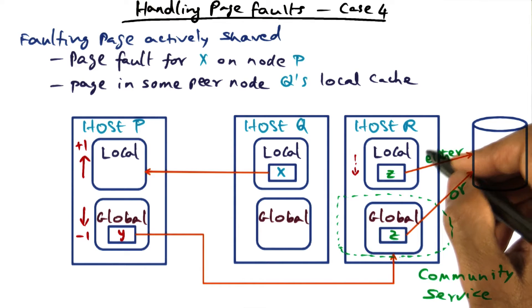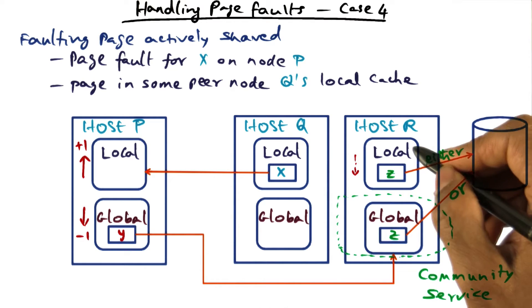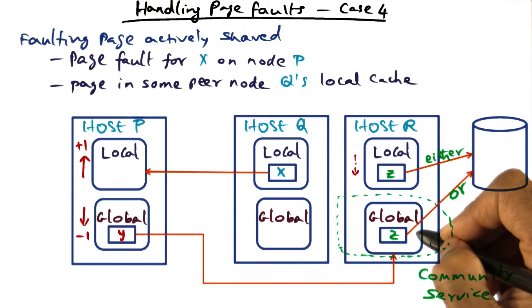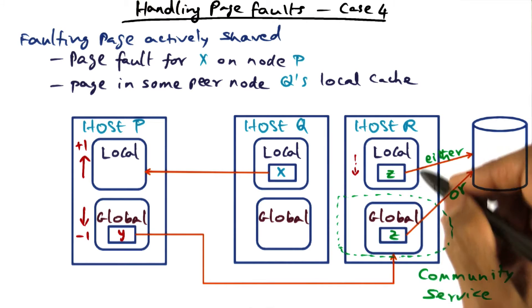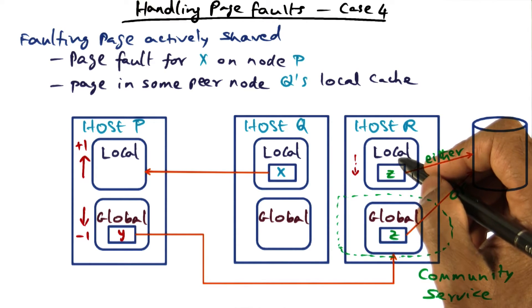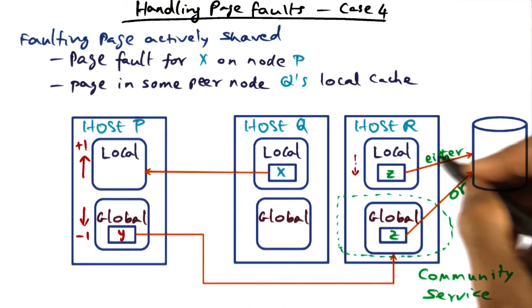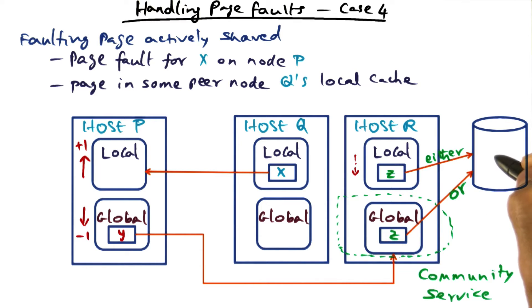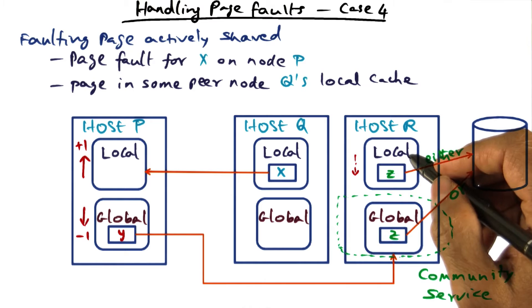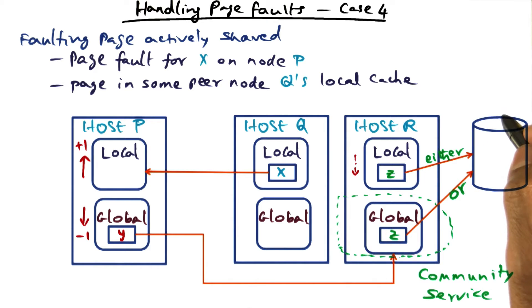And the victim it picks is going to be the LRU candidate. And that could come from the local part or from the global part. Again, if it comes from the global part, we know it's private. We can throw it away. If it comes from the local part, it could be that this is a dirty copy, in which case we have to write it out to the disk or drop it on the floor if it is a clean copy, because the disk always has all the copies of the pages.